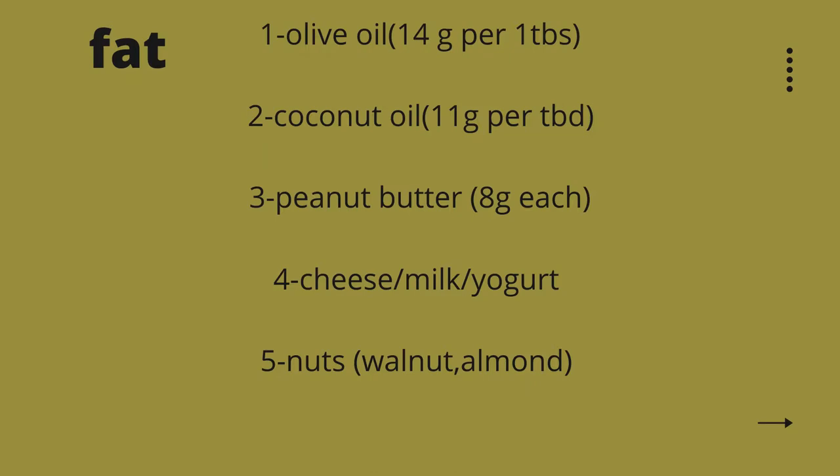For fat, you need oils — either olive oil or coconut oil, but I suggest having both. Use olive oil for cooking and coconut oil for seasoning salads or other foods. A little coconut oil gives you a high amount of calories and fat without added carbs. Peanut butter is also great — it tastes good and is high in macronutrients. You can also use cheese, meat, yogurt, or other dairy products. For nuts, I recommend walnut and almond — skip the more expensive varieties, as these will provide all the necessary daily nutrients.